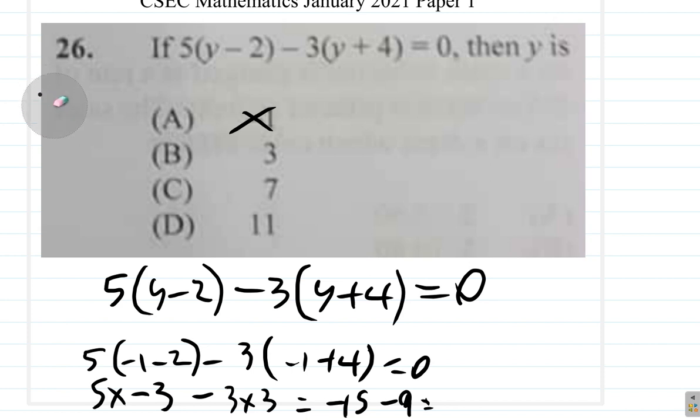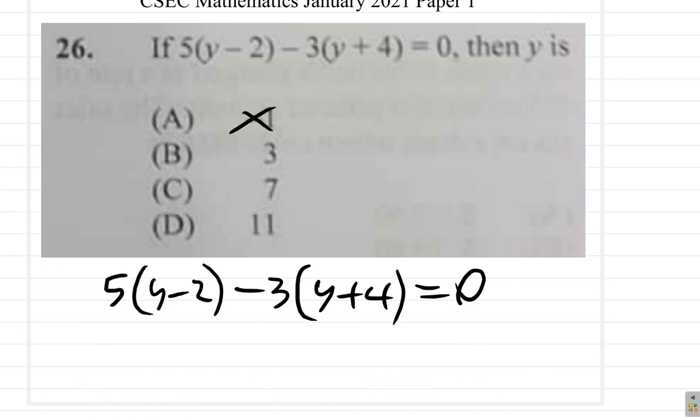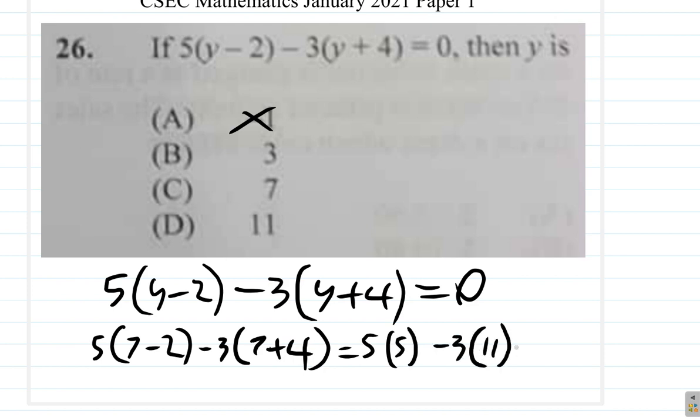Let us try 7. Ah, I wonder if it's 7. 5 times 7 minus 2 minus 3 times 7 plus 4 is what? 11. 5, 5, 5, 25 minus 3, 11, 33. Oh, oh.